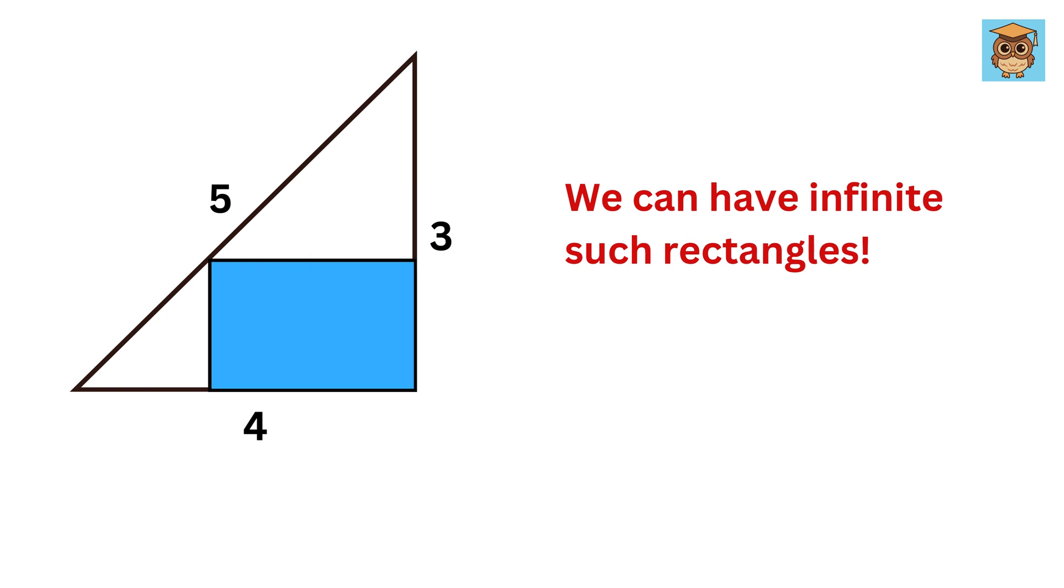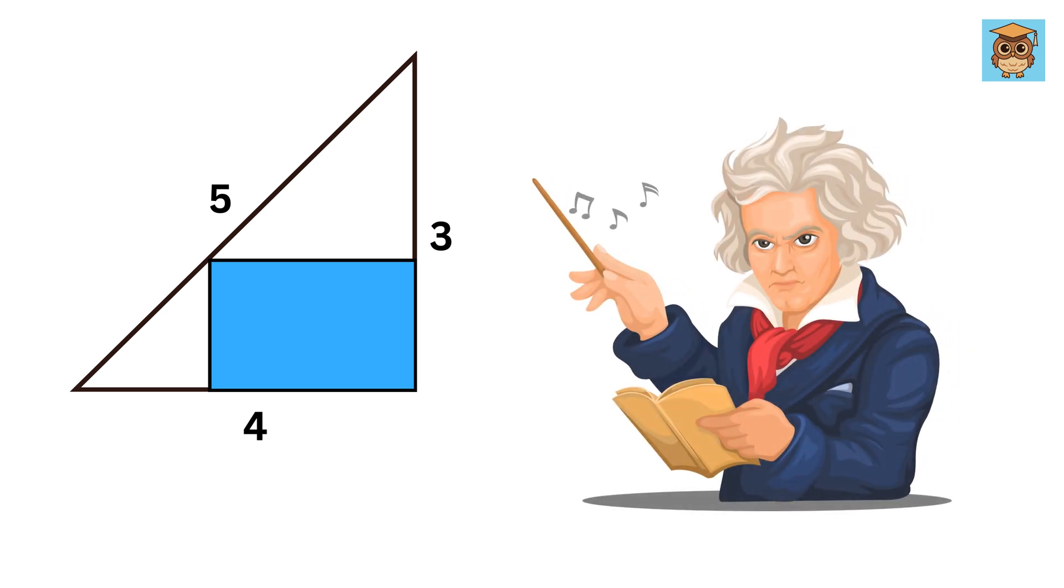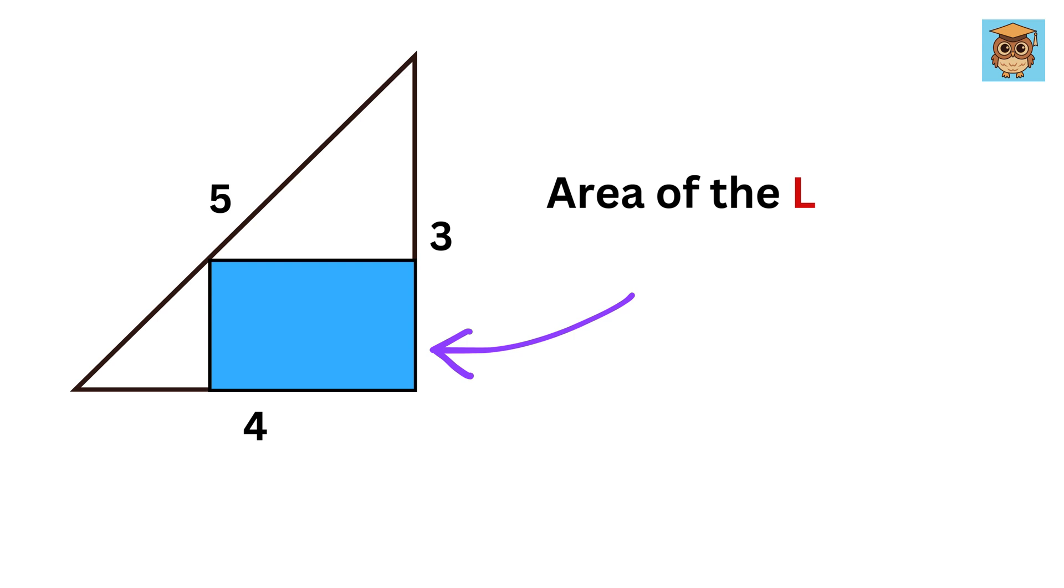But the only condition is that only one vertex of this rectangle must lie on the hypotenuse, and the opposite vertex must lie at this point. Now, you being a genius mathematician have been called here to find the area of the largest possible rectangle inside this 3, 4, 5 right triangle.